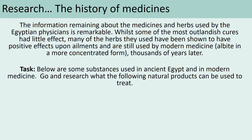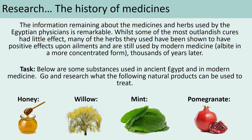There is going to be a list of natural remedies that ancient Egyptians used. We have honey, willow, mint, and pomegranates. I would like you to exit this PowerPoint and quickly do your own research into how honey, willow, mint, and pomegranates can be used to treat ailments. It doesn't need to be extensive — just a quick Google, read some articles, and jot down some of the treatments these can be used for.